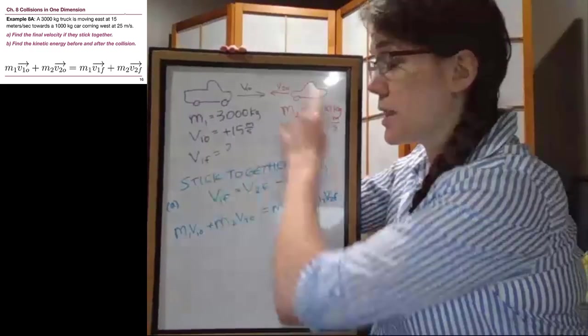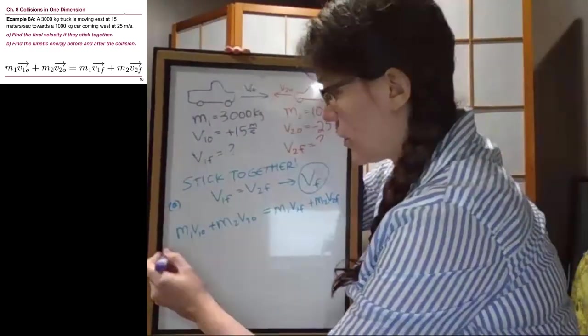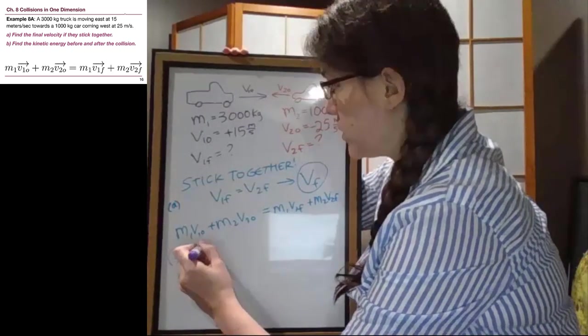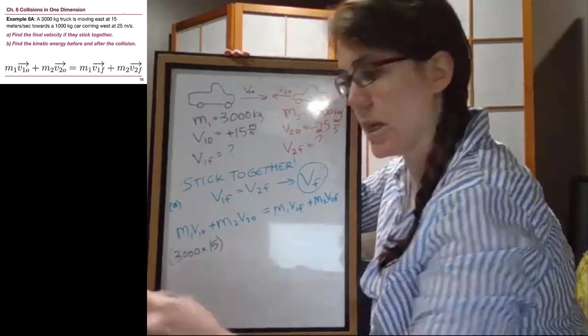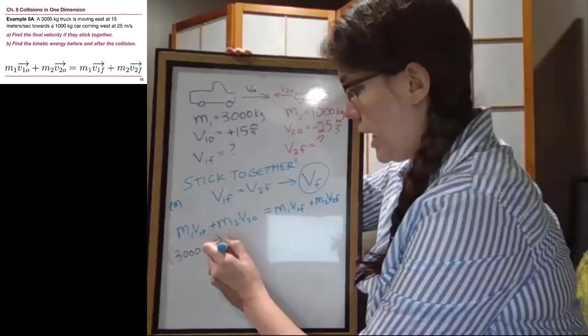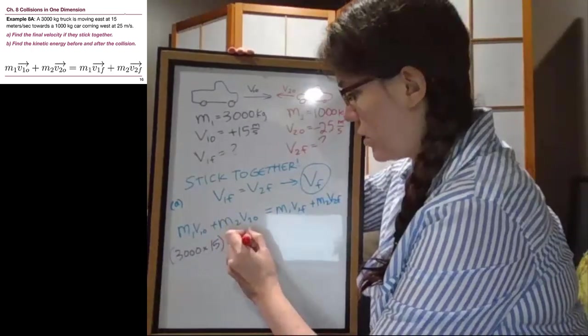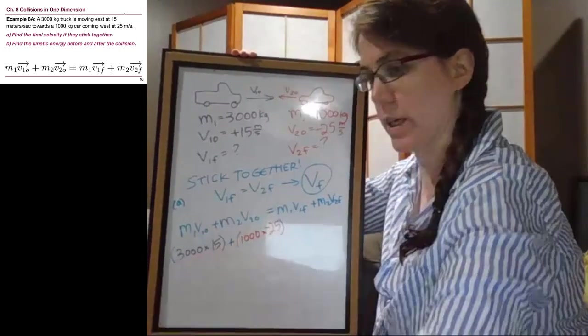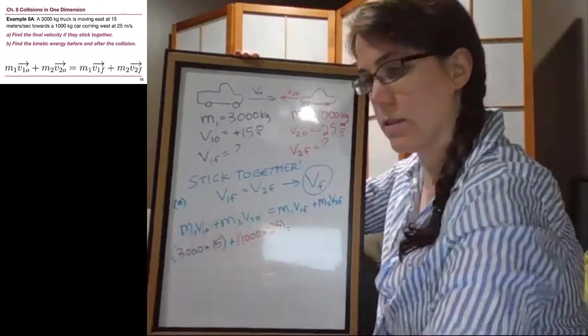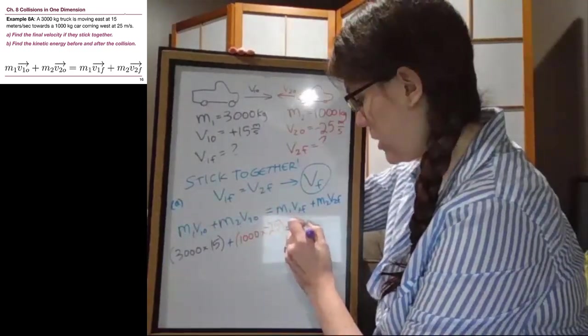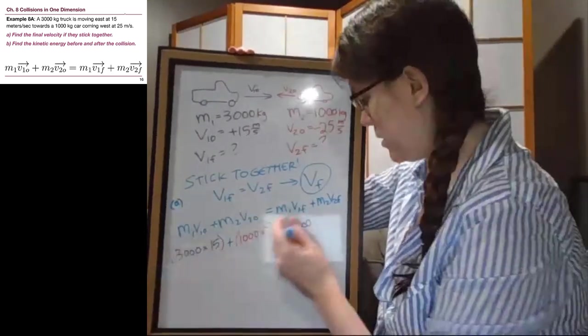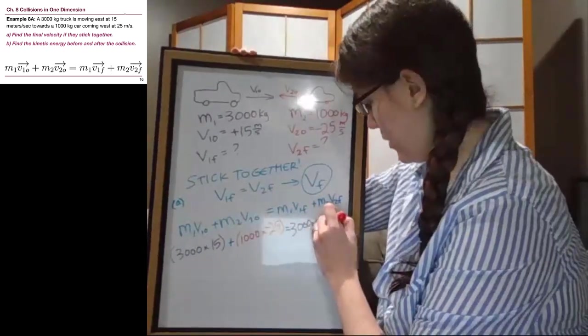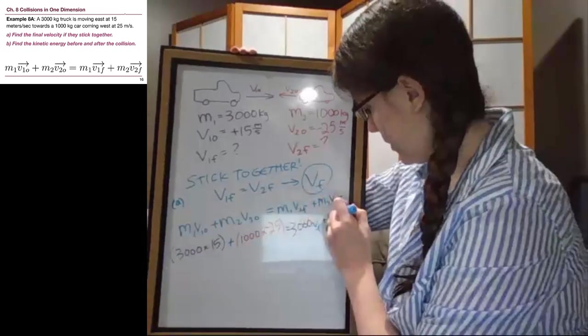Okay, so by having this nice list, we can make sure we know where stuff comes from. We have 3,000 kilograms times positive 15 meters per second, and then we add 1,000 kilograms times negative 25 meters per second. All of that equals 3,000 V final plus 1,000 V final.